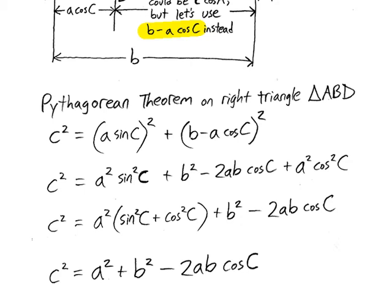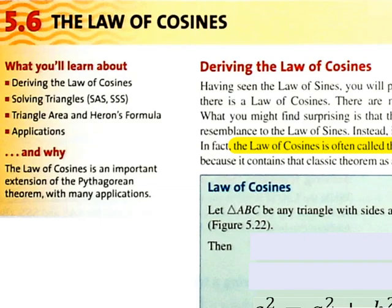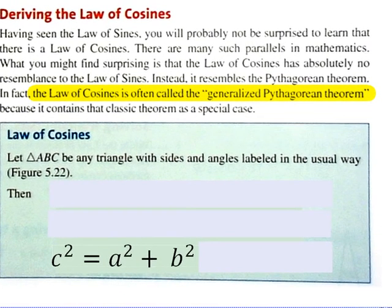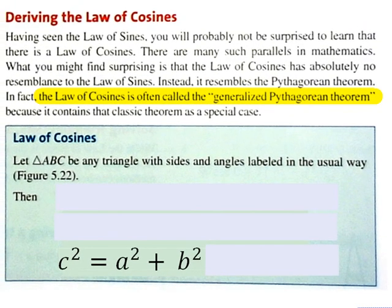C squared equals A squared plus B squared minus 2AB cosine big C. And this, ladies and gentlemen, is one of the three equations that constitute the law of cosines. Let me go ahead and go to the next page here. That's the chapter we're on, the law of cosines.